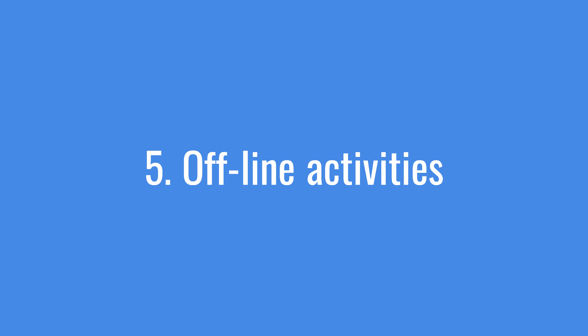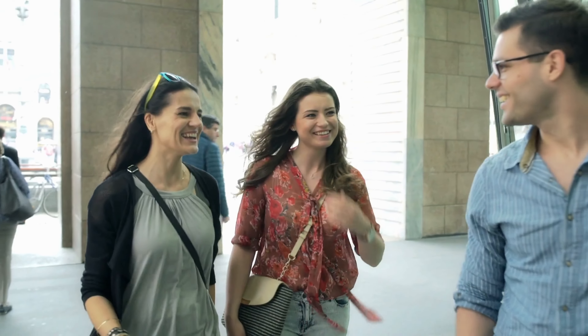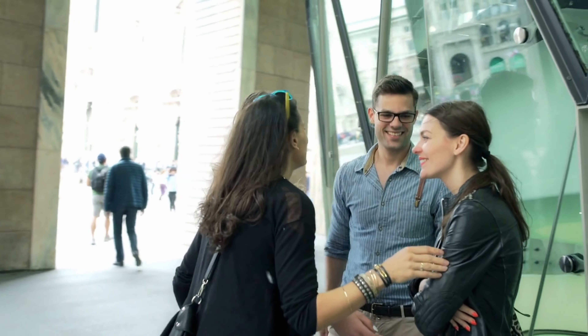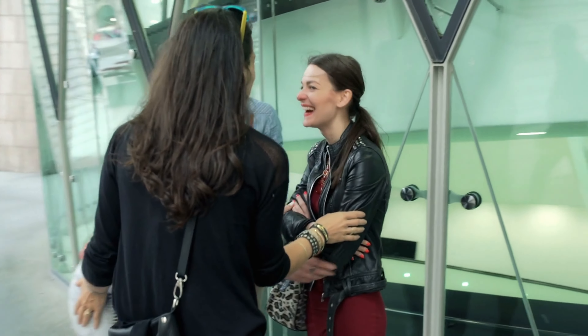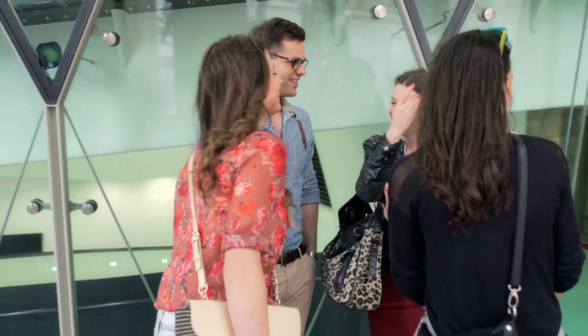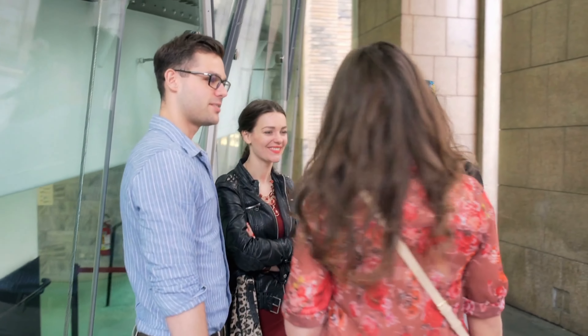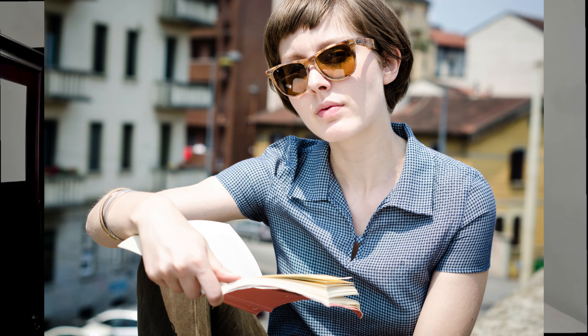Number five: identify opportunities for real-world interaction. Instead of spending a lot of time online and using technology to interact, you can find opportunities to interact with people in the real world — meeting friends, doing non-digital activities, and also practicing offline activities like writing things down on paper, using alternatives so that we can reduce technology use.